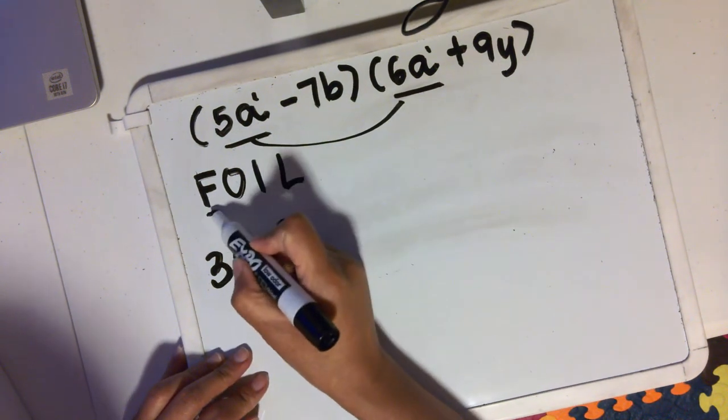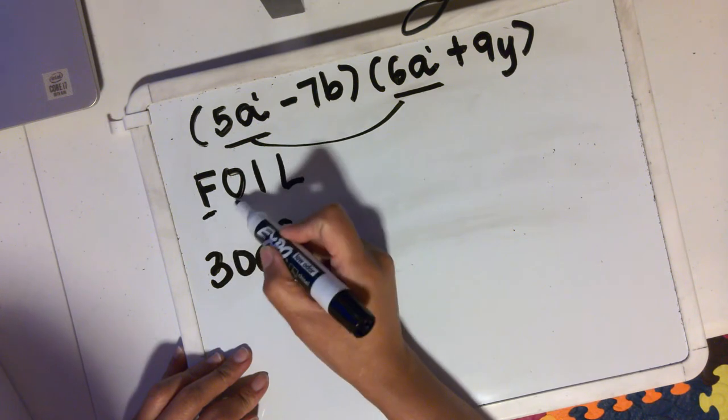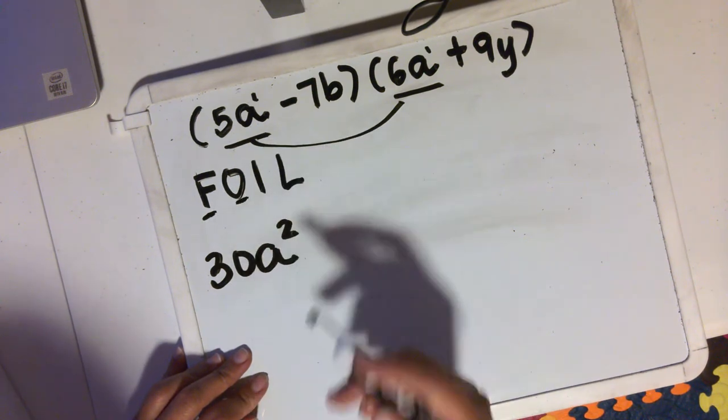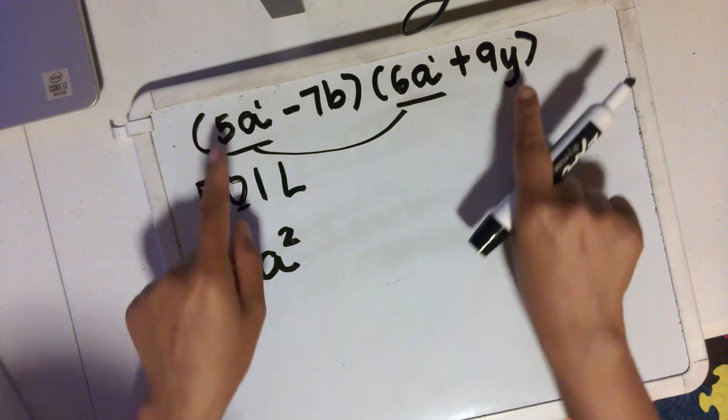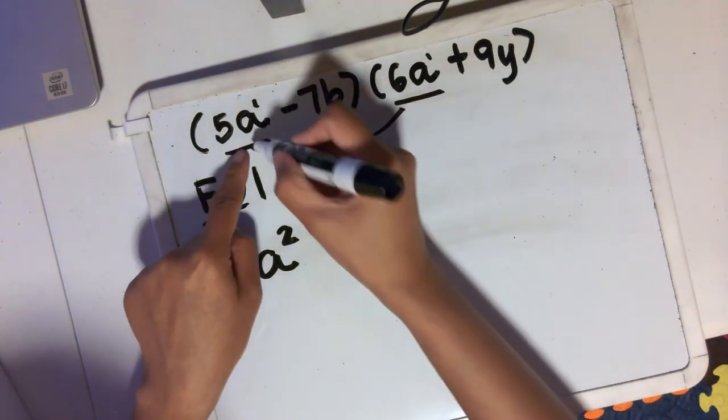Next, we're finished with the first term multiplied by first term. Now outer term times outer term. So the outer terms are these two. So we're going to multiply them.